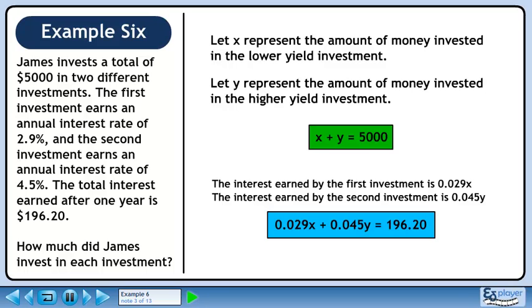The interest earned by the first investment is 0.029x, and the interest earned by the second investment is 0.045y. If the total interest earned is $196.20, then 0.029x plus 0.045y equals $196.20.